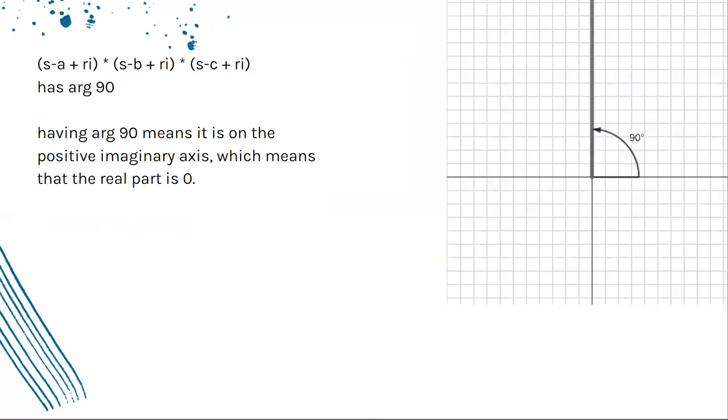Now what exactly does it mean to have an argument of 90 degrees? It means that it is on the positive imaginary axis here, and what we can use from this is that the real part has to be zero.